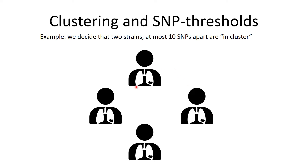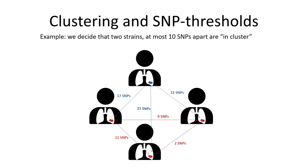Imagine we have this population of patients and we want to know whether there is ongoing transmission happening and whether there are any cases linked by recent transmission. We proceed with culturing the respective samples, extracting the DNA, performing whole genome sequencing, and then we compare the genomes. Once we do this, we can calculate the SNP distance between these genomes, and when we perform clustering analysis we set a threshold of SNPs that will define recent transmission according to certain criteria.